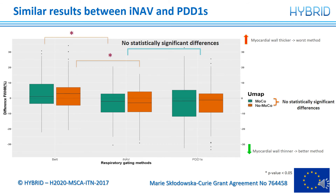First, we found that there was no statistically significant difference between the techniques obtained with corrected and uncorrected mu maps in all of the methods. Second, looking across the methods, we saw that with INAP and PET data-driven, the apparent myocardial thickness was thinner than the reference, while with belt the value did not improve, presenting a significant difference with the other methods.